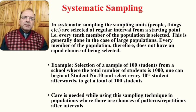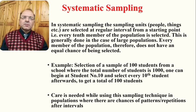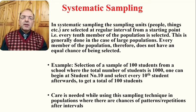While using systematic sampling, we need to take care that in populations where there are chances of patterns or repetitions after intervals, that needs to be taken into consideration. More details on these issues will be addressed in a future presentation. The simple definition is that in this technique, the units of sample are selected at regular intervals, and not every member of the population has an equal chance of being selected, unlike simple random sampling.